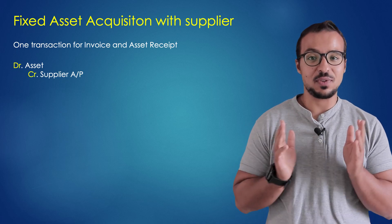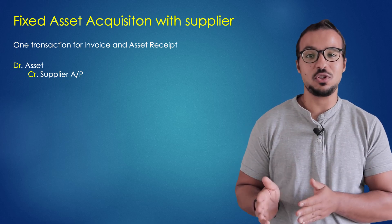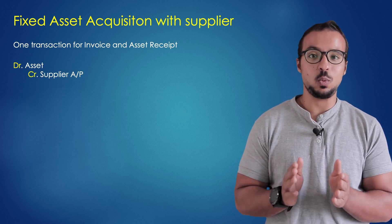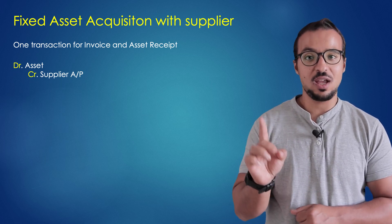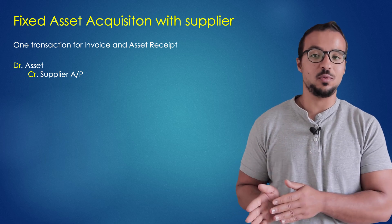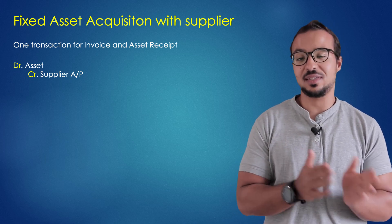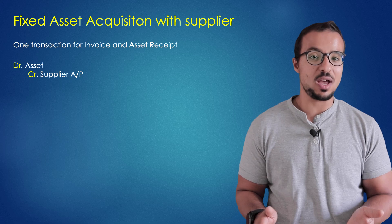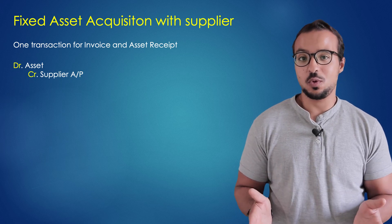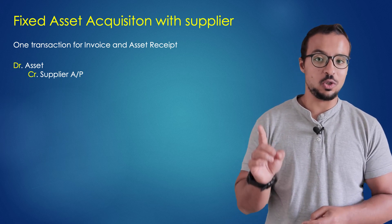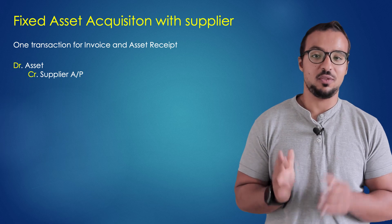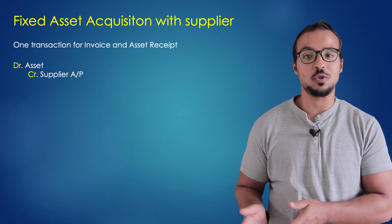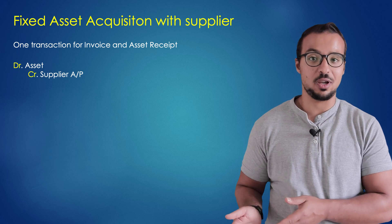The first business process is fixed asset acquisition against a supplier. We use this process when we want to have only one transaction that will post both the supplier invoice and the fixed asset acquisition. This is the most simple business process; it doesn't require integration with materials management. The financial entry is a debit to the fixed asset and a credit to accounts payable for the supplier account.